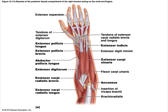The extensor carpi radialis brevis lies deep to the extensor carpi radialis longus and is somewhat shorter. Its origin is the lateral epicondyle of the humerus, and its insertion is the base of the third metacarpal. It is innervated by the deep branch of the radial nerve. Its prime action is to extend and abduct the wrist, and it acts as a synergist with the extensor carpi radialis longus to steady the wrist during finger flexion.